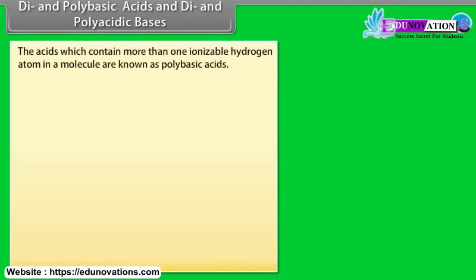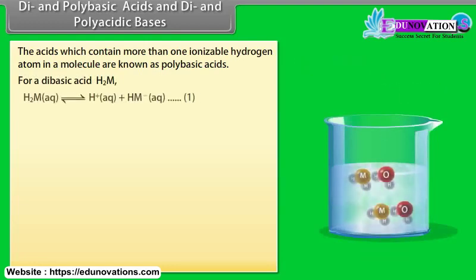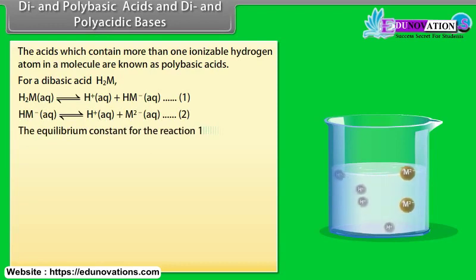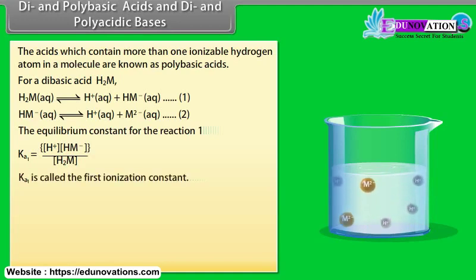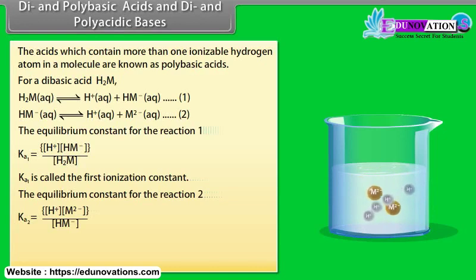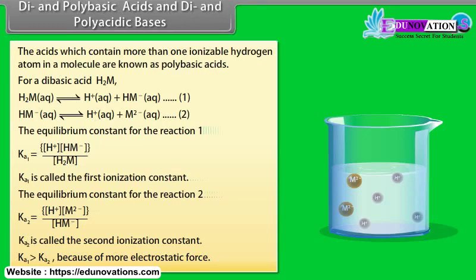Dibasic and polybasic acids. The acids which contain more than one ionizable hydrogen atom in a molecule are known as polybasic acids. For a dibasic acid H2M, ionization occurs in two steps. The equilibrium constant for reaction 1, Ka1 = [H+][HM-] / [H2M], is called the first ionization constant. The equilibrium constant for reaction 2, Ka2 = [H+][M²-] / [HM-], is called the second ionization constant. Ka1 is greater than Ka2 because of greater electrostatic force.